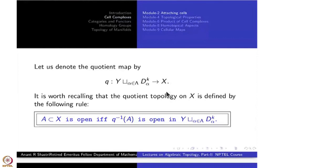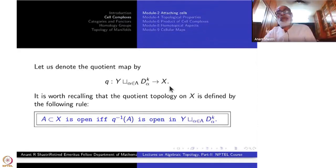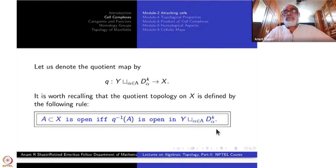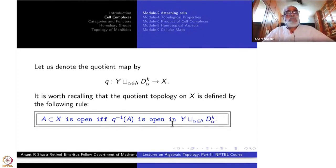Remember the meaning of the quotient space: the topology on X is such that a subset of X is open if and only if its inverse image under q is open in the disjoint union. The disjoint union of these spaces is given the disjoint topology.